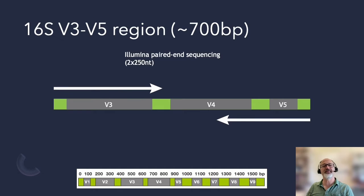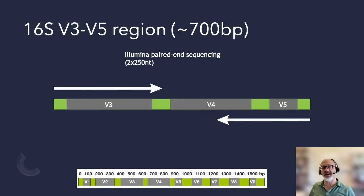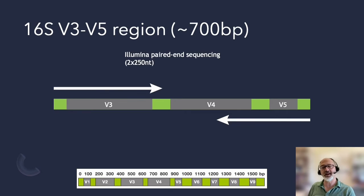And then finally, V3-V5, where the reads don't overlap at all. You can do this as single-end, or you may want to merge those in the middle by adding a string of uncalled nucleotides and do the analysis as if it were one long read.